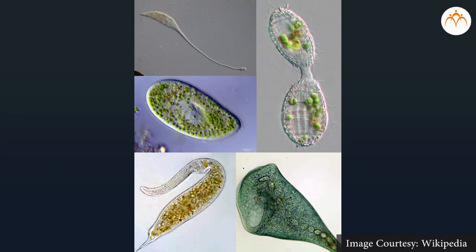However, these organisms also reproduce asexually during unfavorable conditions through a process called multiple fission. In this process, the organism is protected by a thick cover called a cyst. Inside the cyst, many daughter organisms are produced by mitotic divisions. Later, upon the return of favorable conditions, the cyst breaks to release the new organisms.